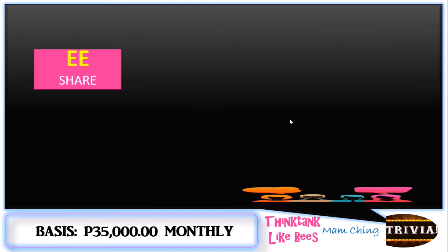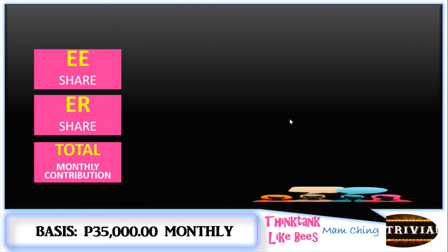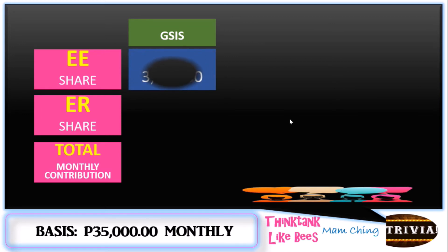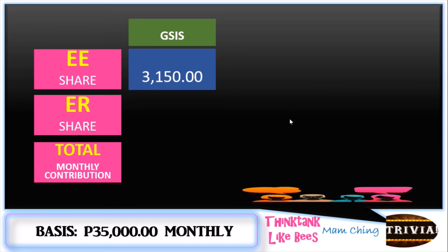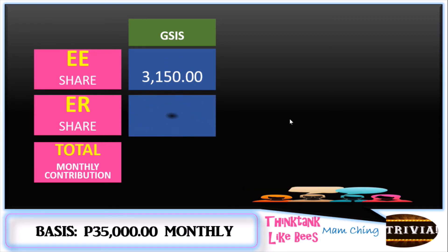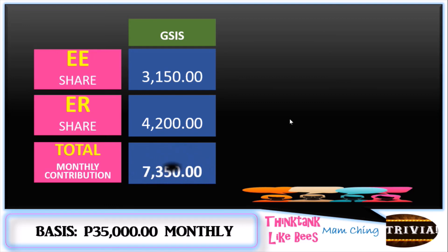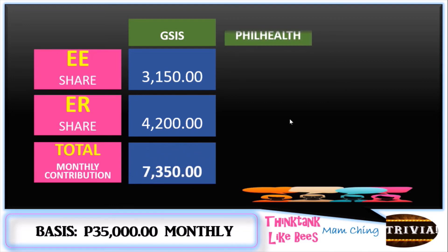So for another example, if we have a ₱35,000 monthly salary: ₱35,000 multiplied by 9 percent gives the employee share of ₱3,150. For the employer, ₱35,000 times 12 percent equals ₱4,200. So the total monthly GSIS contribution is ₱7,350.